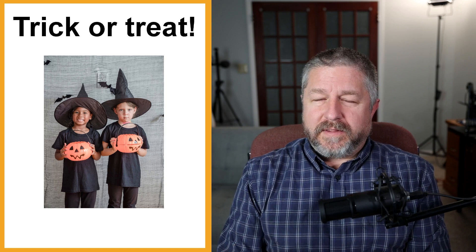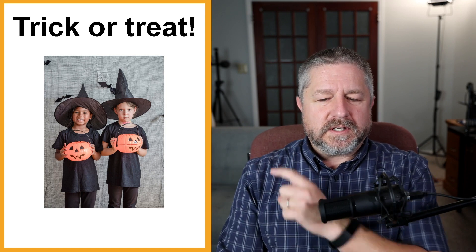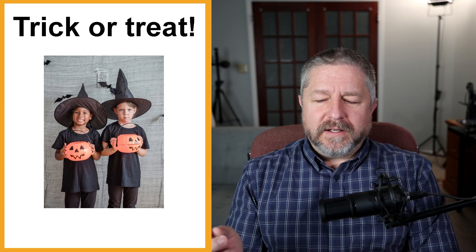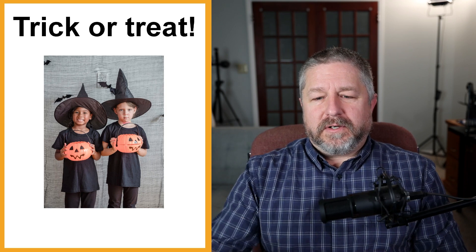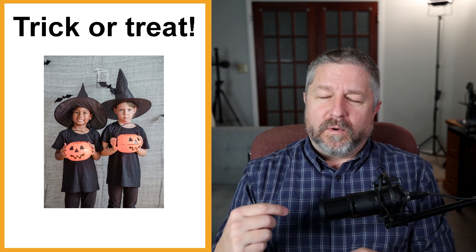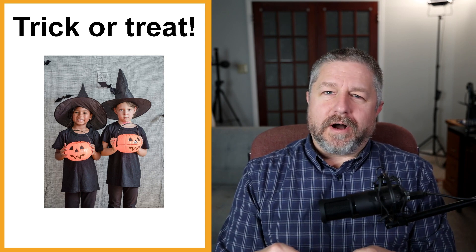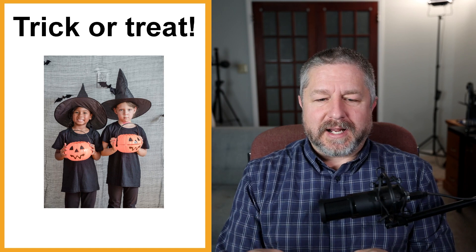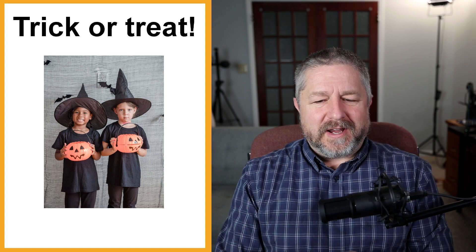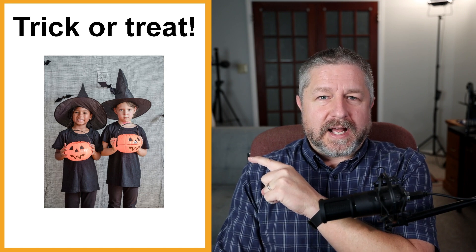Halloween happens on October 31st. On that day it's usually fairly cool weather in our area but in spite of the cold, kids will go out and go from house to house, from door to door. They'll ring the doorbell or knock and then they'll say 'trick or treat.' A long time ago, trick or treat meant either give me a treat, give me some candy, or I will play a trick on you, but it's not very often that kids actually play tricks on people at Halloween.